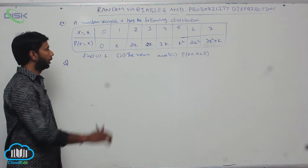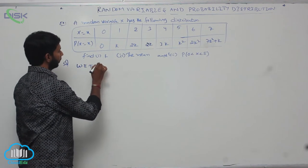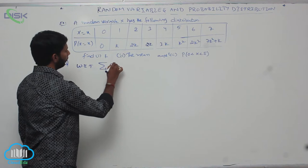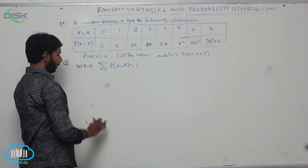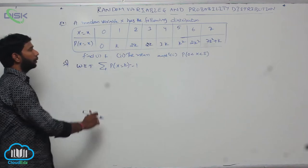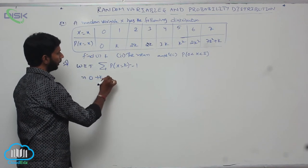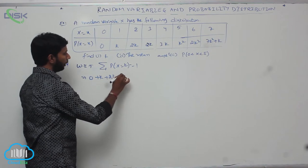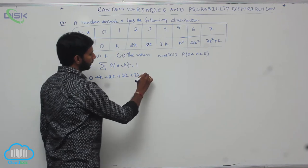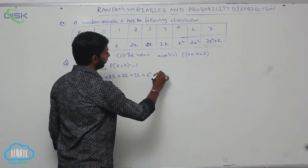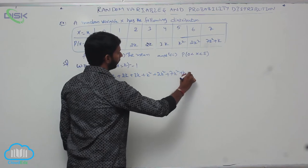We know that the sum of probabilities is equal to 1, that is sigma P(X=xi) = 1. That implies 0 plus k plus 2k plus 2k plus 3k plus k squared plus 2k squared plus 7k squared plus k is equal to 1.